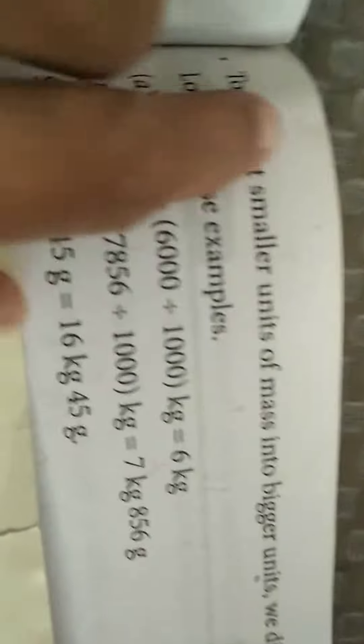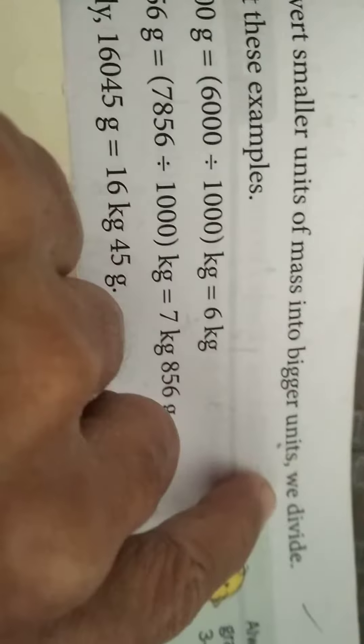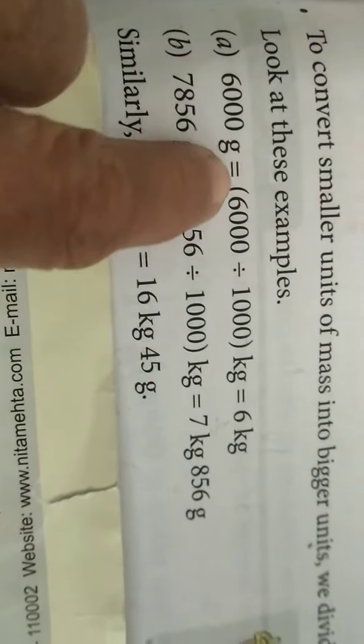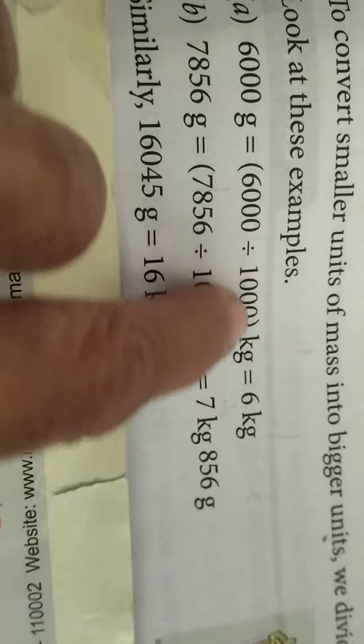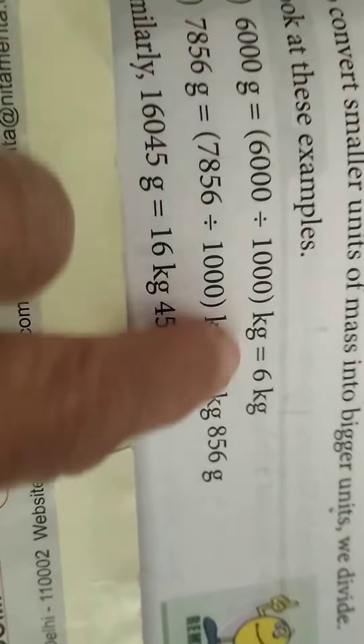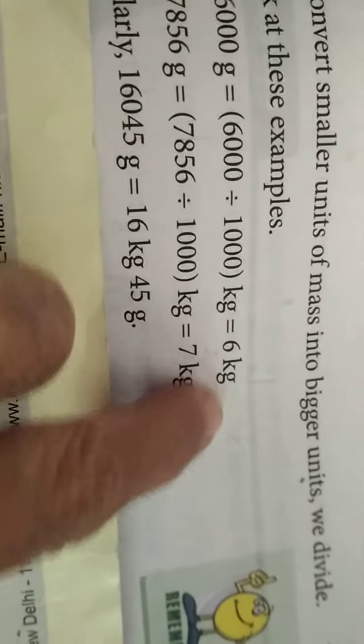To convert smaller units of mass into bigger units, we divide. For example, 6000 grams equals 6000 divided by 1000. We're converting grams to kg, smaller to bigger. That gives us 6 kg.